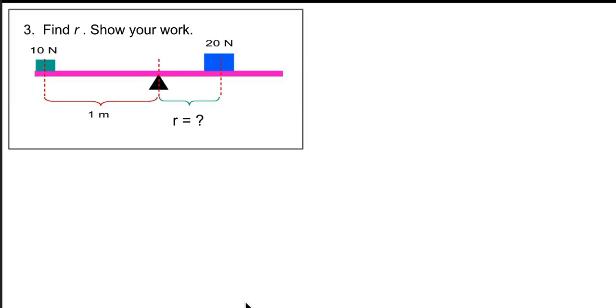So here we have 10 newtons on the left, 20 newtons on the right. We're trying to figure out what the position of the 20 newton object should be. So the idea is that the green box would tend to cause counterclockwise rotation and the blue would be clockwise rotation. And so they would have to balance each other out. And so on the left we would have 1 times 10 newtons and on the right we would have r times 20 newtons.